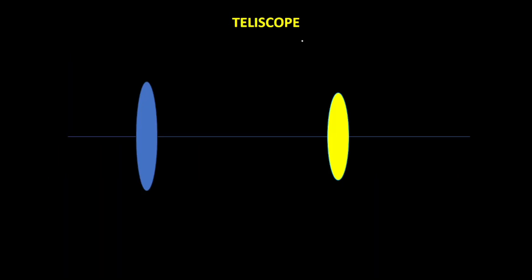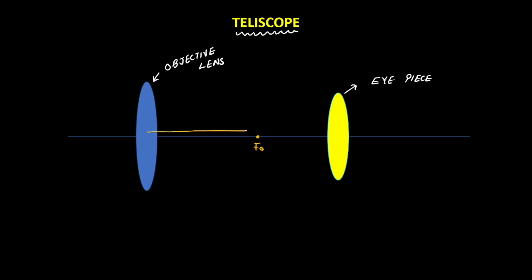Now, let's understand the image formation in the telescope with the help of some simple ray diagrams. This first convex lens has a larger aperture and a larger focal length — we call this the objective lens. The focus of the objective lens lies somewhere here; we call this Fo, and the focal length of this lens is small fo.